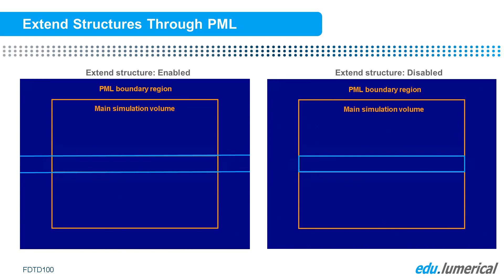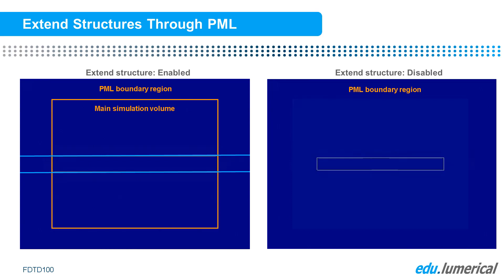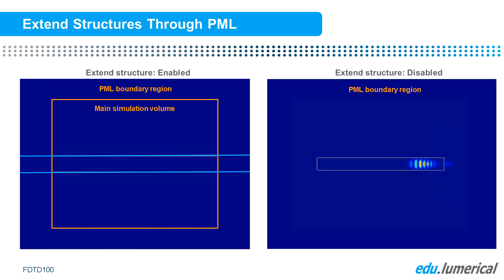In this example, the waveguide is terminated at the inner edge of the simulation volume. When the Extend option is not used, a large reflection occurs because the waveguide does not extend through the PML absorbing region.